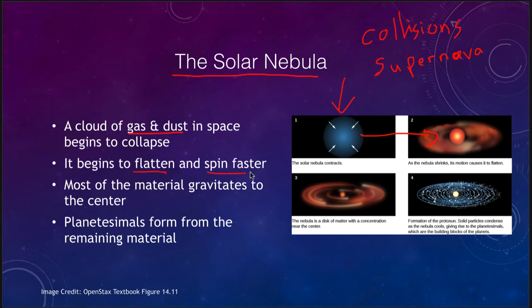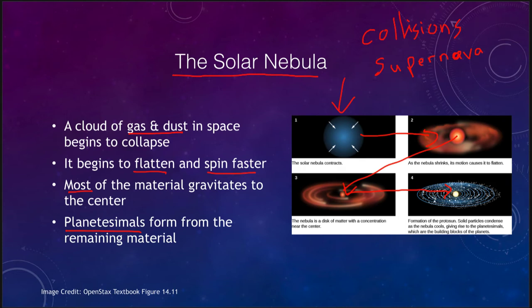The material flattens into a disk and spins faster and faster. Material gravitates toward the center, forming a protostar. Eventually the star begins to form with planets and material around it. We don't form planets right away, but first form planetesimals — the building blocks of planets. It's all due to this gas cloud collapsing, with gravity pulling most material to the center to eventually become the Sun, while the debris left behind forms the planets over time.